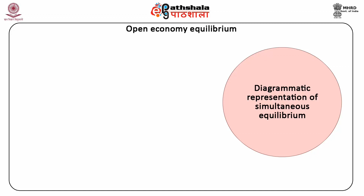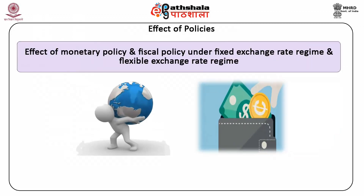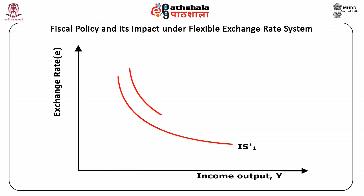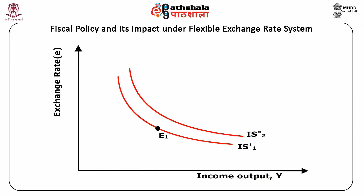The diagrammatic representation of the simultaneous equilibrium is shown in the given figure. Further, we will discuss the effect of monetary policy and fiscal policy under the fixed and flexible exchange rate regimes. Consider the given figure. The economy is at equilibrium at point E1, with exchange rate E1 and income level Y1. Let there be an expansionary fiscal policy, leading to a rise in government expenditure or a fall in taxes. This has a stimulative effect on aggregate demand, causing the IS star curve to shift to the right from IS star 1 to IS star 2.